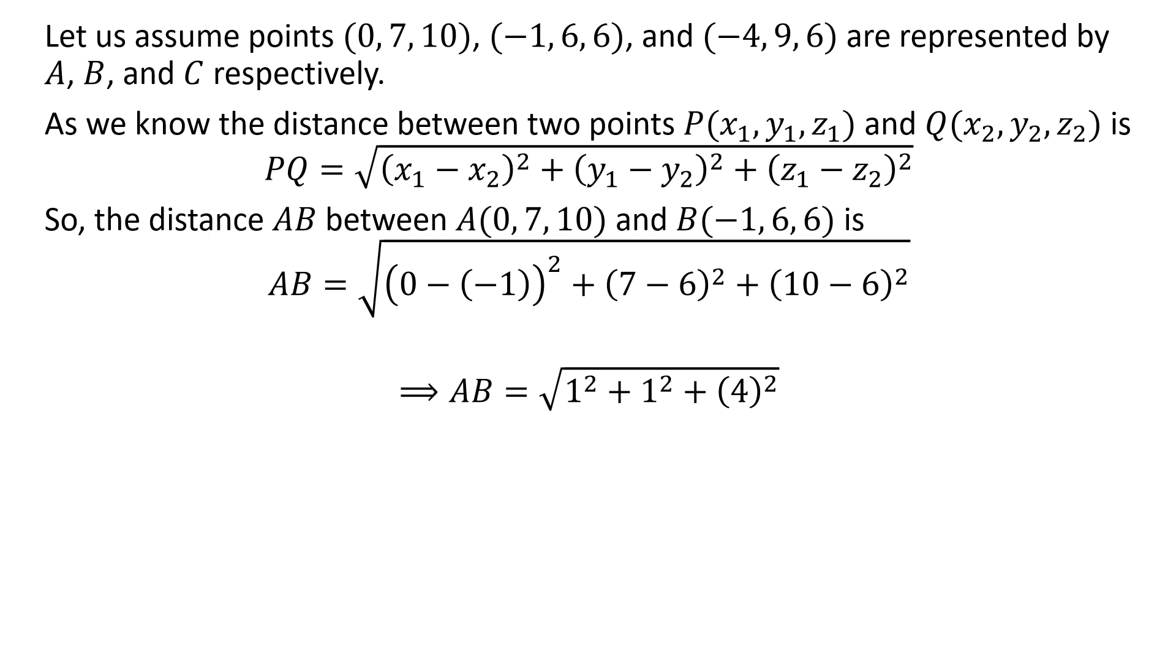Further simplification gives us the distance AB is equal to square root of 1² plus 1² plus 4². Evaluation of the above gives us the distance AB is equal to square root of 18 which is equal to 3 times square root of 2.